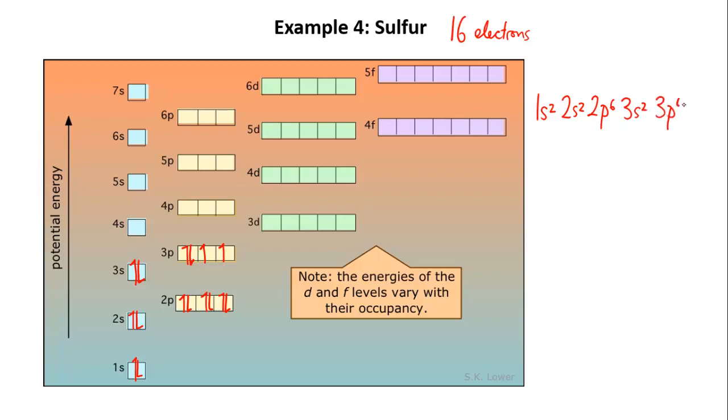You may notice that for larger atoms things are going to start getting a bit complicated. For instance if you look carefully in this diagram the 3d orbitals are actually slightly higher in energy than the 4s orbital which means the 4s orbital actually gets filled before the 3d despite technically being in a higher energy level. However for this course you don't need to be able to do electron configurations up this high.